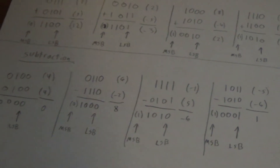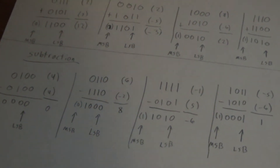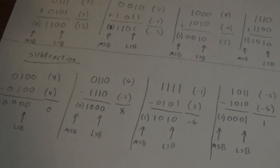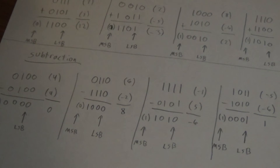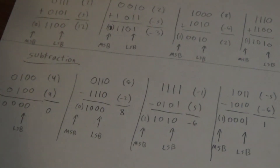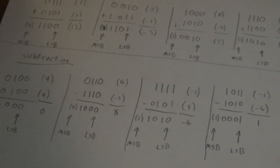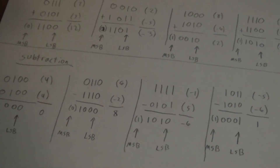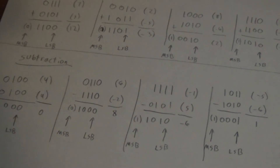For the subtraction, we have the binary subtraction of the decimal integers: four and four which will give us zero, six and negative two which will give us eight, one and five which will give us negative six, and negative five and negative six which will give us one.